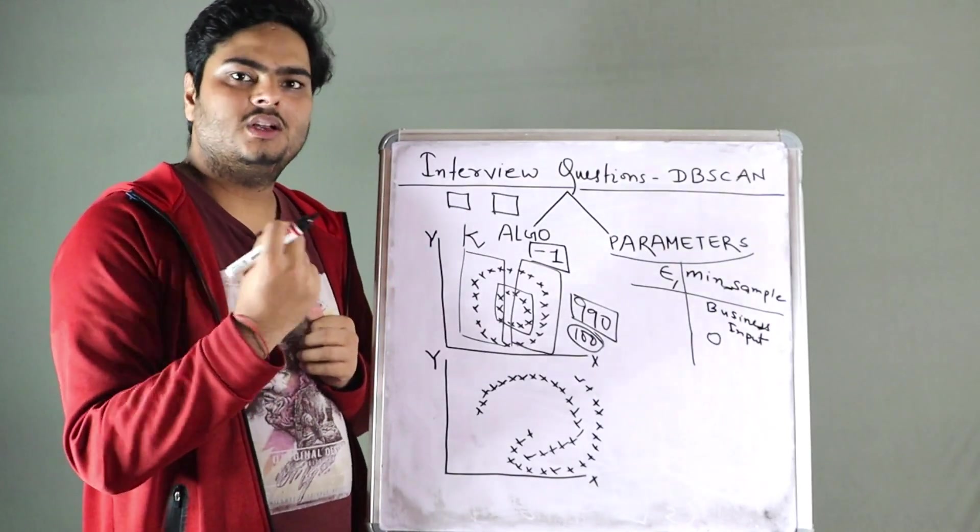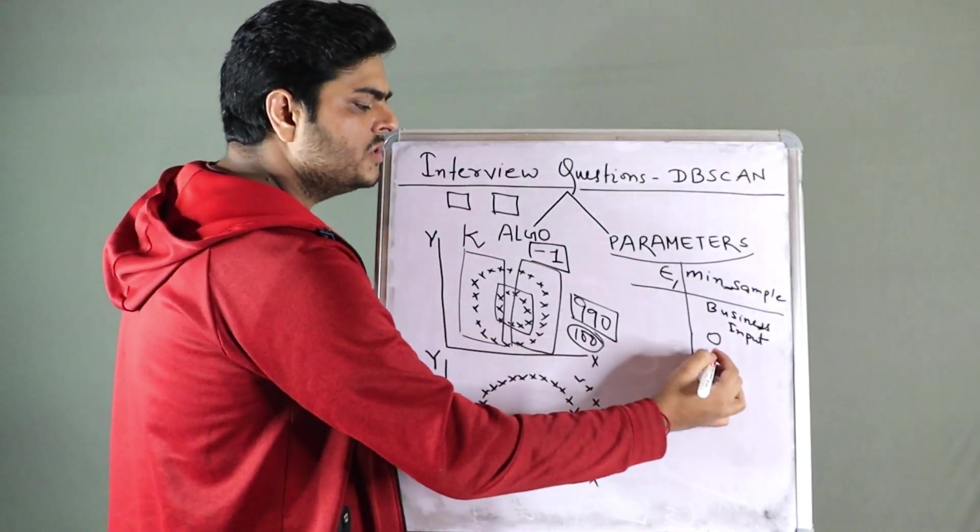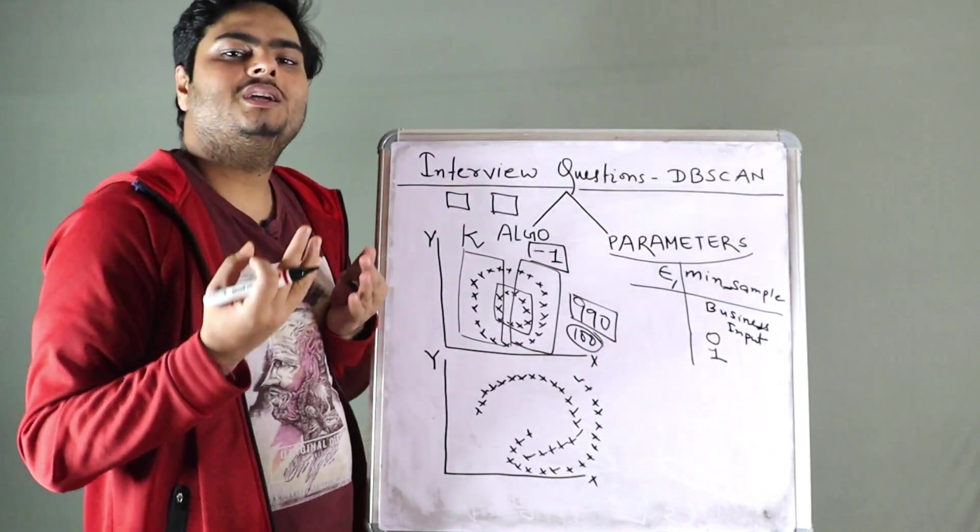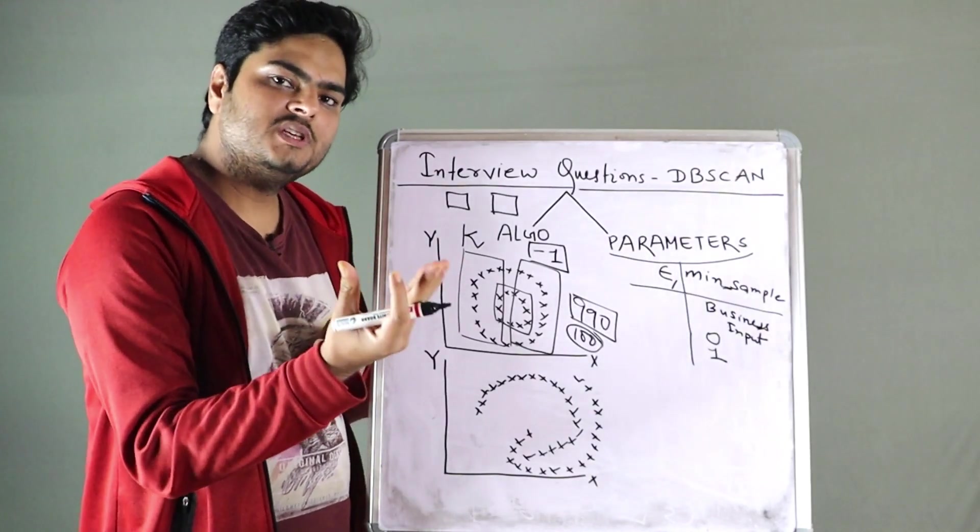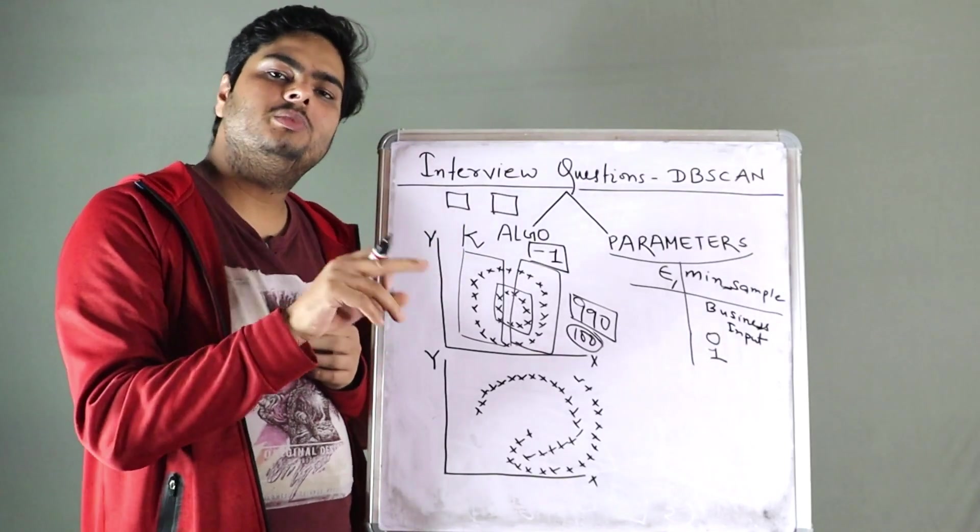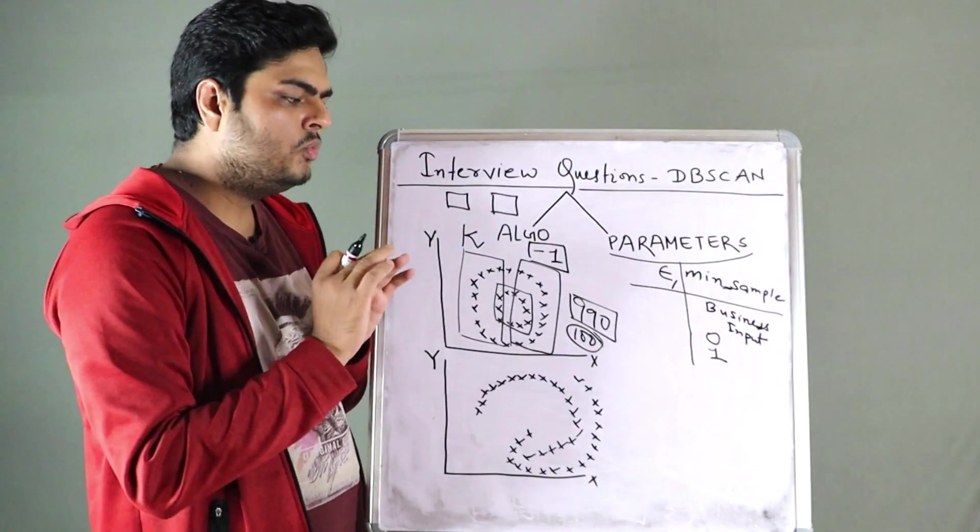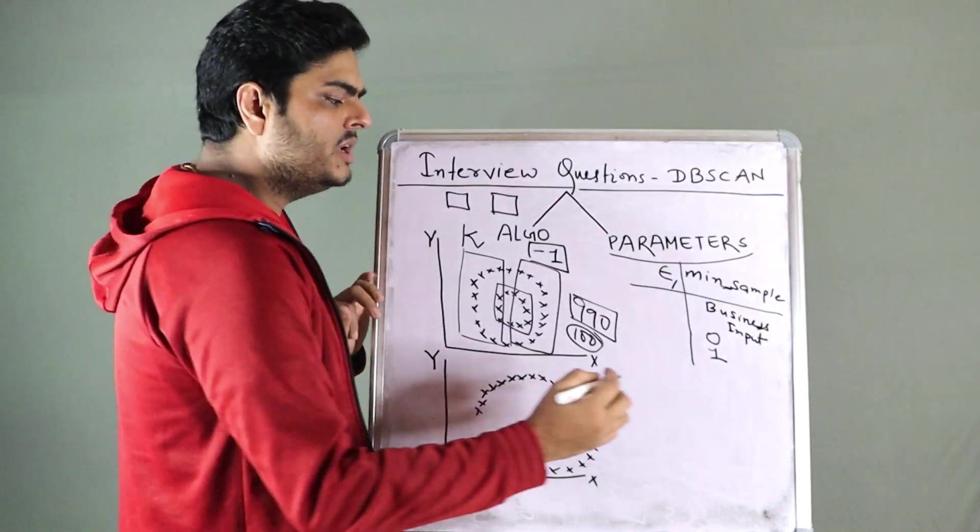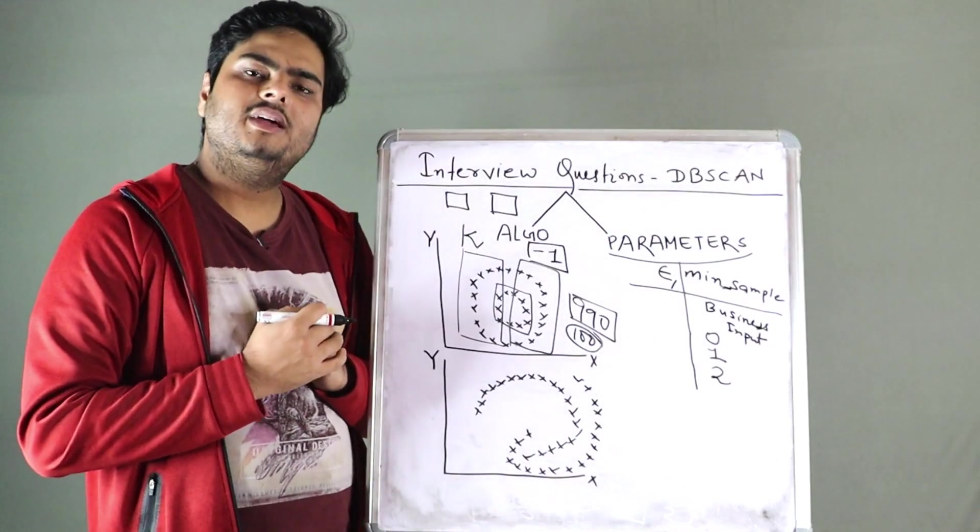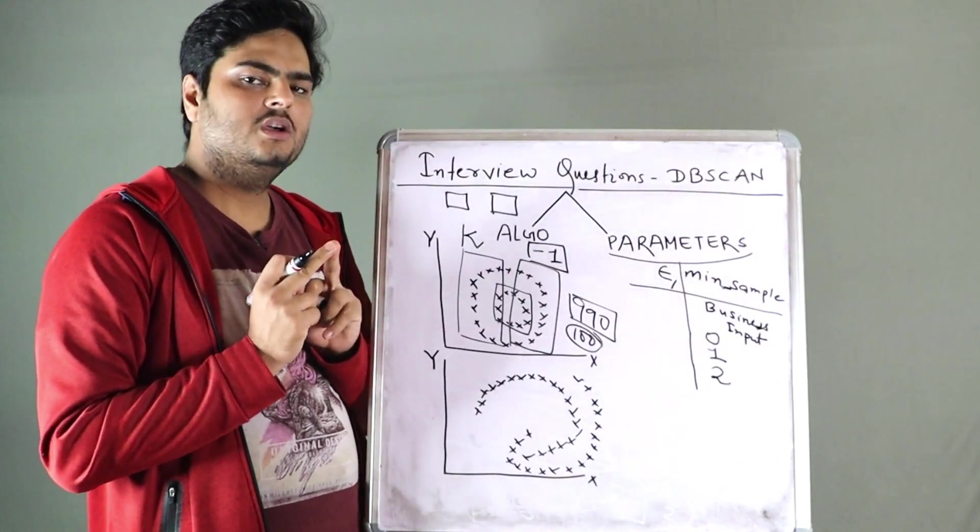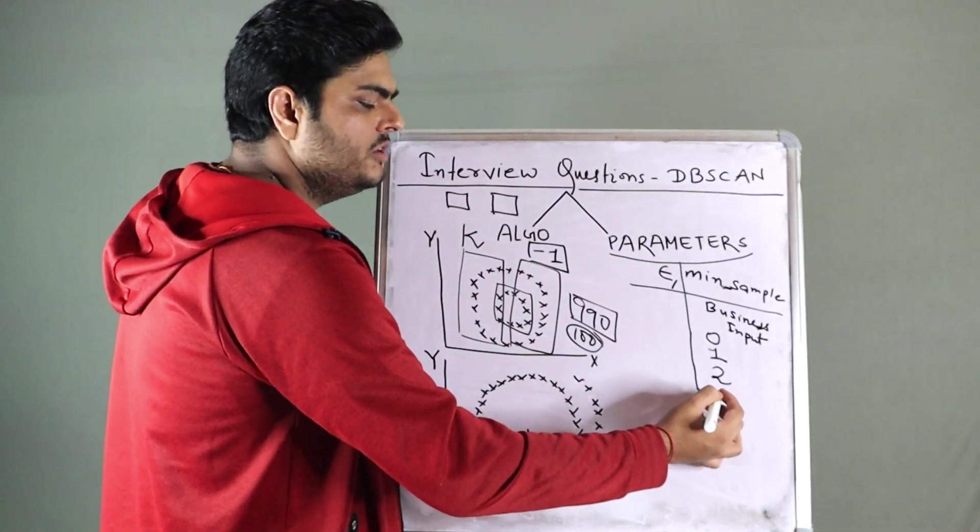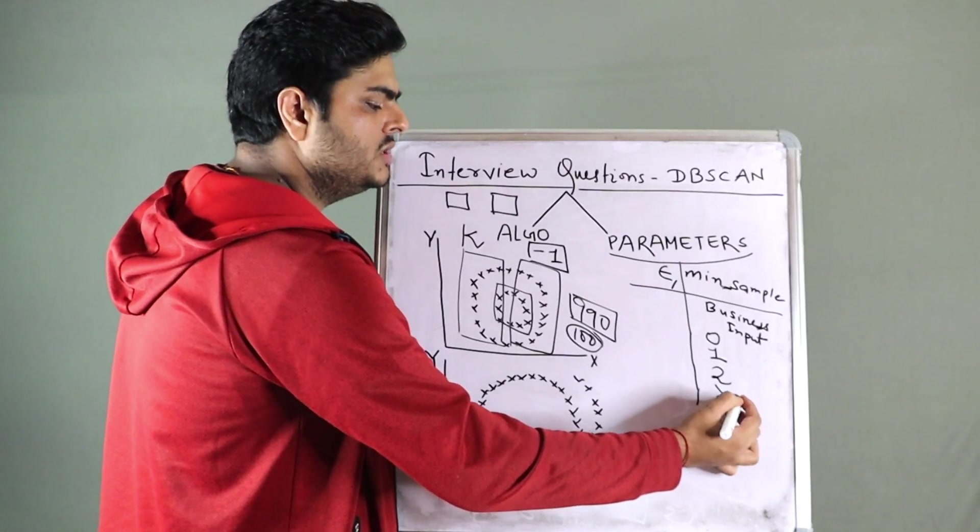Minimum number of sample one, you cannot have. Why? Because one is core point itself. In minimum number of sample, if you say five, then including core point, there should be four other points to be called as a cluster. So one is also ruled out. What about two? If you put here two, then what will happen is, it is a very less number, very less number. So always, always, it should never be, it should always be greater than equals to D plus one.